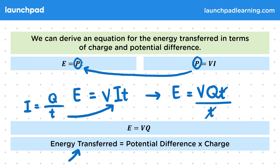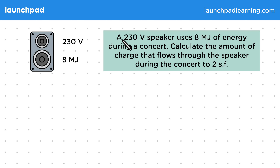The energy transferred is measured in joules, the potential difference is measured in volts, and the charge is measured in coulombs. Let's look at an example: a 230-volt speaker uses 8 megajoules of energy during a concert. Calculate the amount of charge that flows through the speaker during the concert to two significant figures.